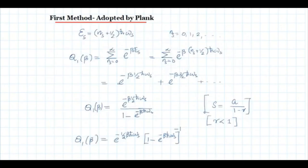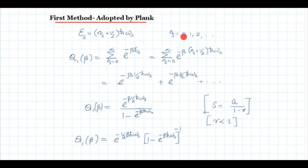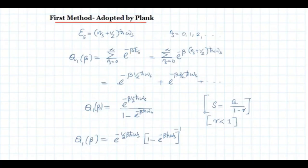The first method was adopted by Max Planck. The energy of a quantum harmonic oscillator is given by E_s = (n_s + ½)ℏω_s, where n_s can take values 0, 1, 2, etc. We can write the single-particle partition function q₁(β) as the sum over all energy eigenvalues of the Boltzmann factor e^(−βE_s). This gives a sum from n_s = 0 to infinity of e^(−β(n_s + ½)ℏω_s).